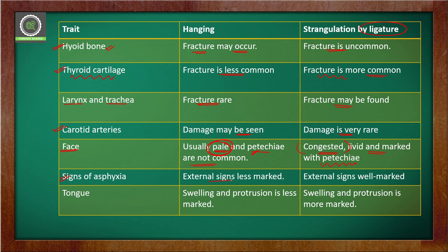The eleventh trait is signs of asphyxia: external signs of asphyxia are less marked in case of hanging, but in ligature strangulation the signs of asphyxia are really very marked. Although hanging is an asphyxial death, when compared to strangulation, strangulation shows more marked signs and symptoms. The twelfth trait is the tongue: in hanging, swelling is present but protrusion is less marked, whereas in strangulation protrusion is well marked along with swelling.